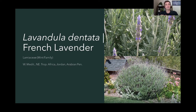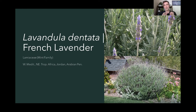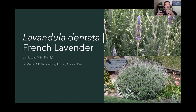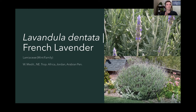The flower spikes on this plant are quite slender and narrow. The purple petals — which may actually be modified leaves — typically appear in late spring along with the fragrance, at the top of the flower spike. This is Lavandula dentata, French lavender.